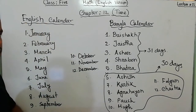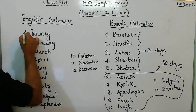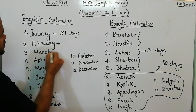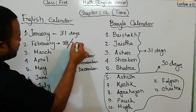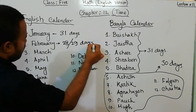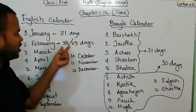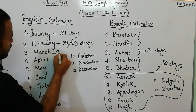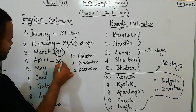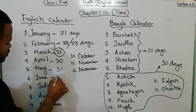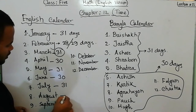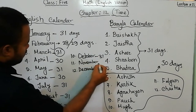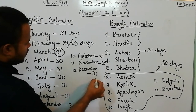In the English calendar, January consists of 31 days. February consists of 28 or 29 days — I will explain when it is 28 or 29 days. March has 31 days, April 30 days, May 31 days, June 30 days, July 31 days, August 31 days, September 30 days, October 31 days, November 30 days, and December consists of 31 days.